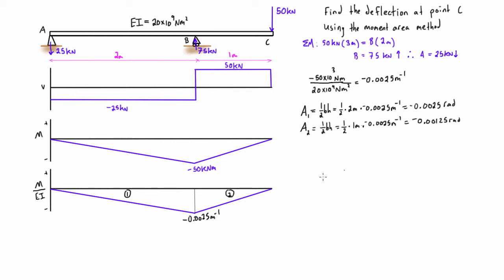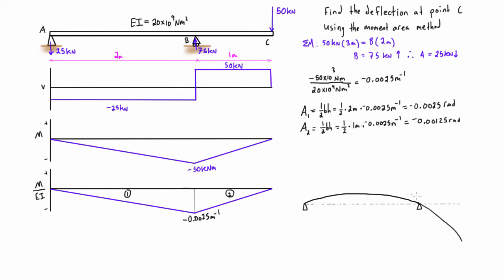The next thing we want to do is draw the deflected structure. Because this is non-symmetrical, we want the deflected structure drawn before we proceed — it helps us plan out the problem. It looks something like this: coming up in the middle and then down on the right-hand side. The moment diagram shows all negative moments, giving us a concave-down shape, and with these boundary conditions there's basically only one way to draw it.